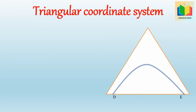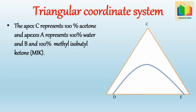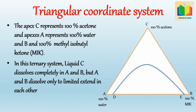Now let's see the triangular coordinate system for a ternary mixture of water, methyl isobutyl ketone (MIK), and acetone. In this triangular coordinate diagram, apex C represents 100% acetone, apex A represents 100% water, and apex B represents 100% methyl isobutyl ketone (MIK). In this ternary system, acetone (liquid C) dissolves completely in water and MIK, but water and MIK dissolve only to a limited extent in each other. So for the separation of acetone from water, MIK is used as a solvent.